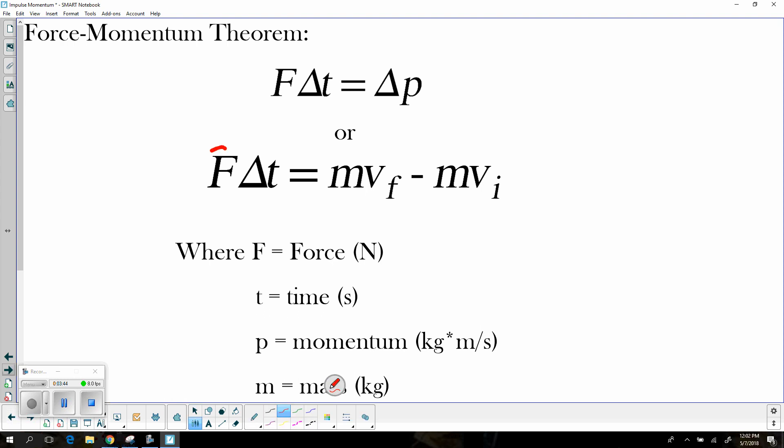So again, this is your impulse side, and again, this is your momentum side, but this is filled out a little bit clearer because you've got the final momentum minus the initial momentum.